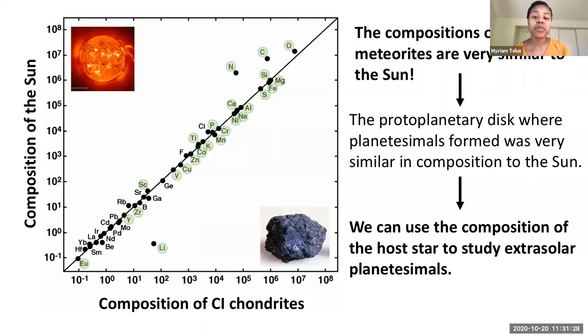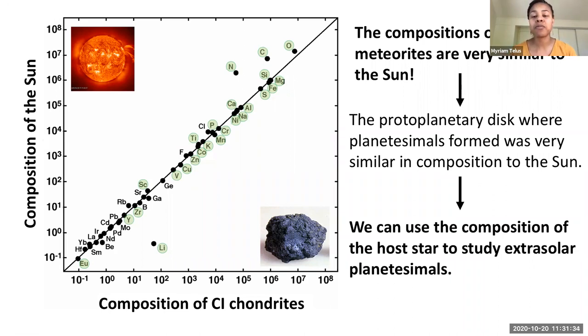Here is a familiar plot of the abundance of elements in the sun and the abundance of elements in CI chondrites. This plot shows the striking similarity between the composition of chondrites and the sun's photosphere. The close agreement between the composition of the sun and chondrites indicates that the bulk composition of the protoplanetary disk where planetesimals formed was very similar in composition to the sun. Therefore, the composition of the host star can be used to constrain the composition of extrasolar planetesimals — the building blocks of terrestrial planets around other stars.